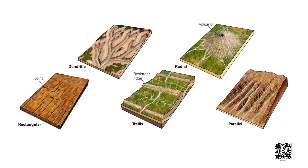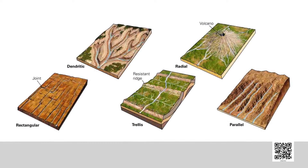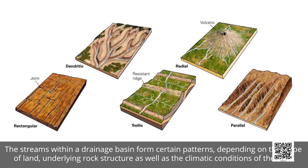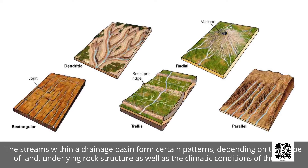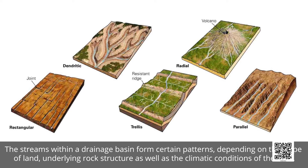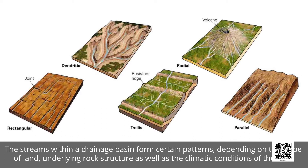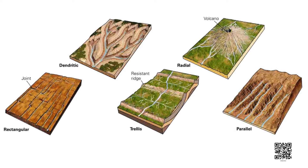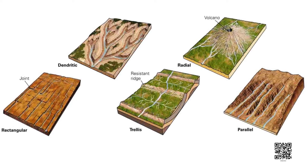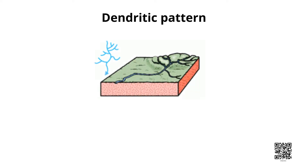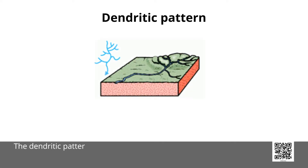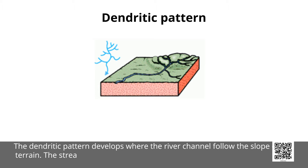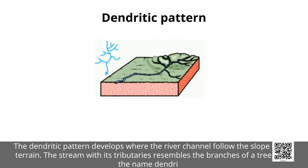The streams within a drainage basin form certain patterns depending on the slope of the land, the underlying rock structure, and the climatic conditions of the area. These patterns are: dendritic, trellis, rectangular, and radial. The dendritic pattern develops where the river channel flows along the slope of the terrain, and the stream with its tributaries resembles the branches of a tree — thus the name dendritic.